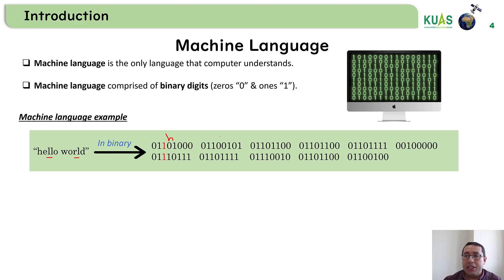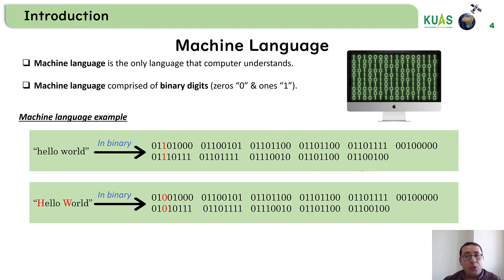The second group of numbers is E, then L, L, O, and then the space. And then the next group of numbers represents the word W, O, R, L, D. So every letter is represented in numbers of zeros and ones. Now suppose we need to change 'hello world' from small letters to capital letters — the computer must know the difference between small and capital letters, and it's already changed here. The difference between the two sentences in binary would be shown in the red numbers.